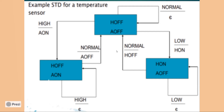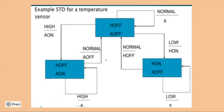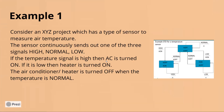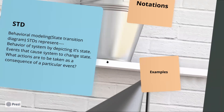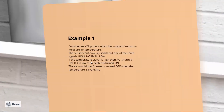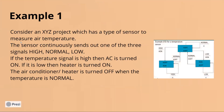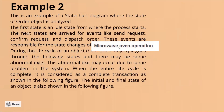This example shows that a state transition diagram doesn't need a hard and fast rule that you always keep the action separate. In some representations, the action can also be shown inside the state itself. This is example one, in which you have three states. Now let's move on to example two.